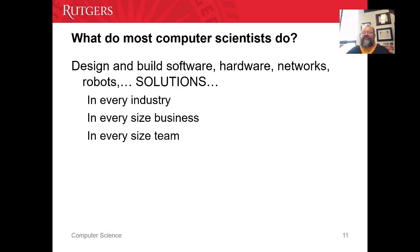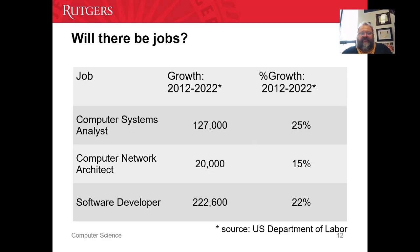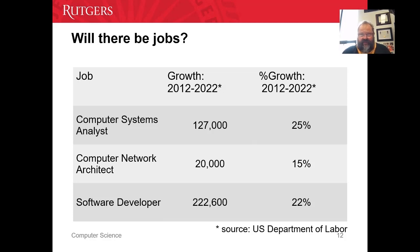Computer scientists build software, hardware, networks, robots. They create solutions to problems in every industry, size, and business team. The question is always: will there be jobs? The answer is always yes. The old statistic used to be that there are 5 million computer science students to fill 12 million jobs. These are some older statistics, but they still hold true. Anecdotally, whenever the market takes a downturn, STEM people still have jobs.